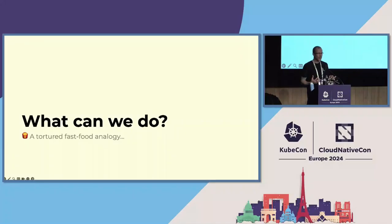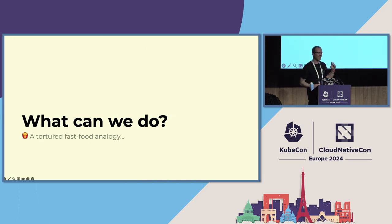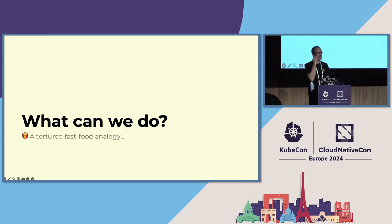So what can we do, as people involved in software production, to secure our software supply chains? Most people get into software as a creative act, and I love creative software development, but the creativity should be at your editor — everything that happens after that should be as bland as possible. I'm going to make a tortured analogy to fast food franchises: your software production should be as predictable as a fast food franchise. I can go to a coffee chain anywhere in the world and get an equally mediocre coffee — that consistency is what you want for your software.